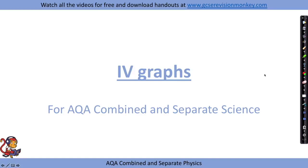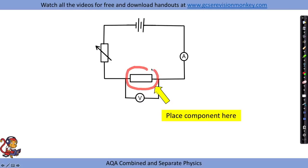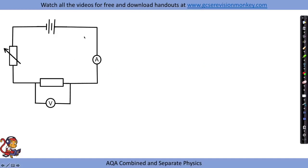IV graphs required practical — you may have heard these called IV graphs or current-potential difference graphs, with I standing for current and V for potential difference. The circuit we need to build is the same throughout, and what we change is the component: we start with a resistor, then swap it for a diode and then a filament lamp. We set up a basic circuit with a battery, an ammeter to measure current, a voltmeter to measure potential difference, and a variable resistor to change the resistance and therefore the current.